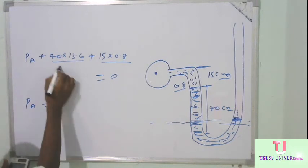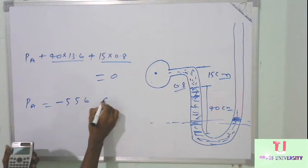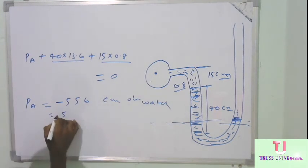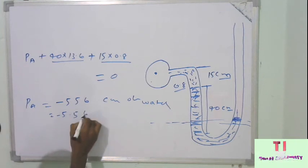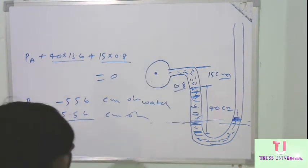So that is equal to 556 cm of water. So really this is minus 556 cm of water. This is giving that the pressure is negative pressure.